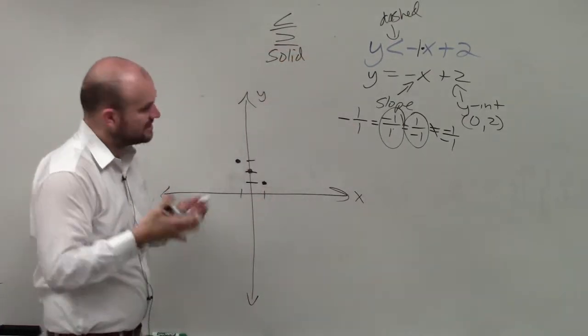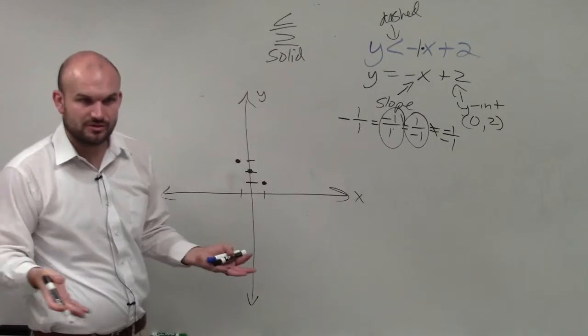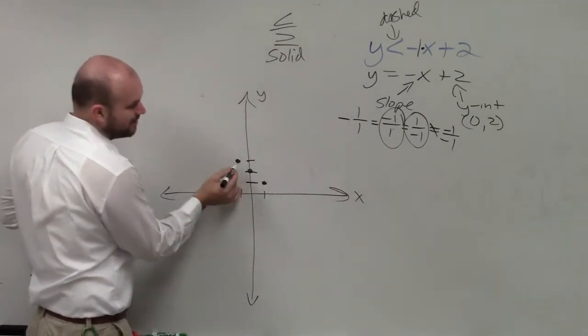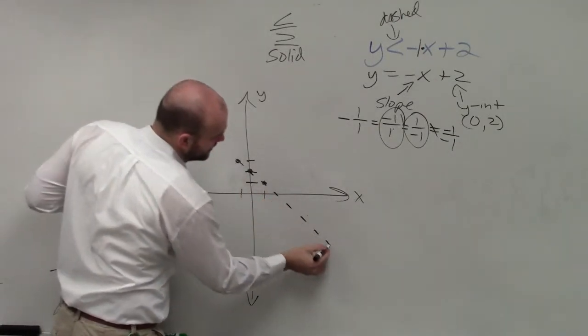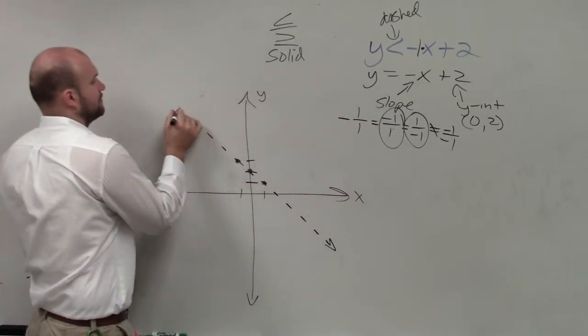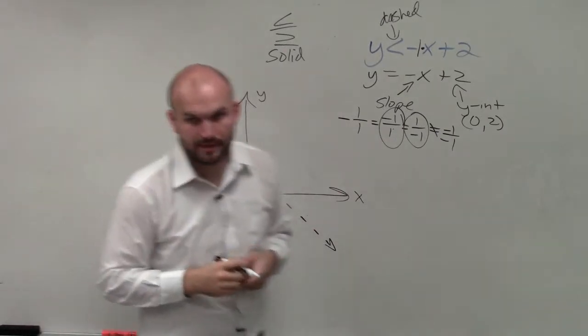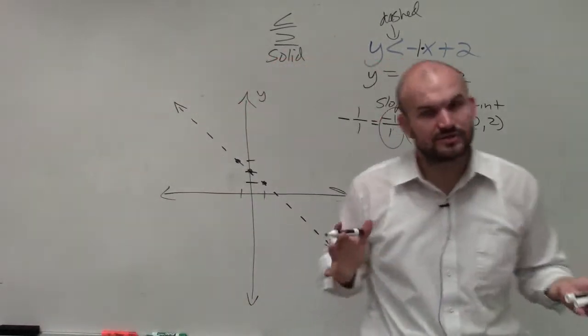And what dashed or solid means, dashed means it's not a part of the solution. The points are not a part of the solution. So when I graph my line, I'm going to graph it as a dashed line. It's not a part of the solution.